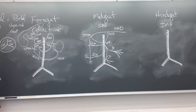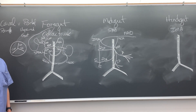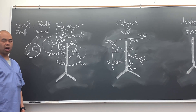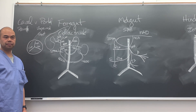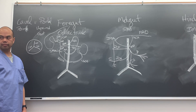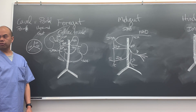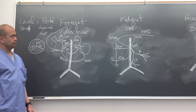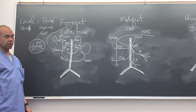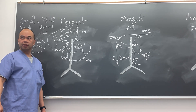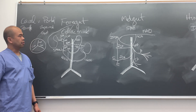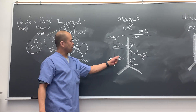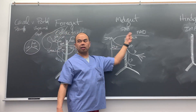The marginal artery of Drummond anastomoses just the colic branches, not all SMA branches. SMA branches recap: ileocolic, right colic, middle colic.